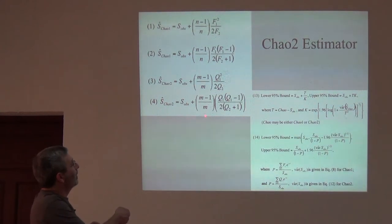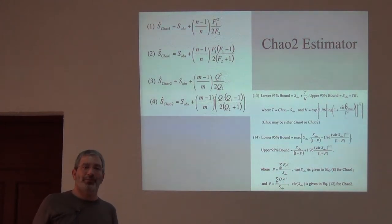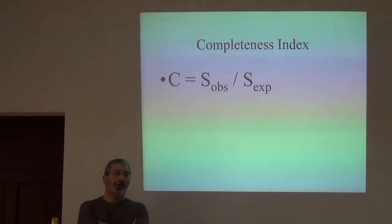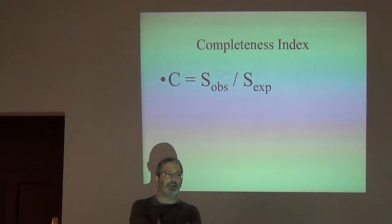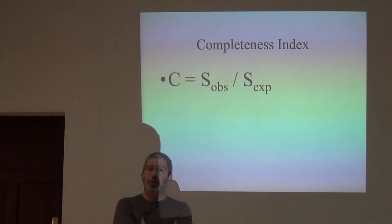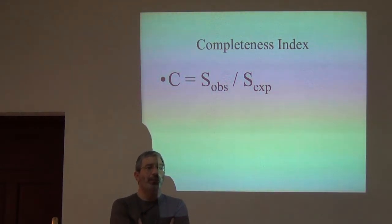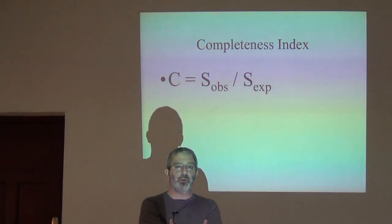We just looked at our two matrices and did some calculations. For the first matrix — the one that had a lot more ones in it — even though they both have the same accumulation curve, for the matrix that had a lot of ones in it, we were pretty sure we were done. We had observed 16 species and we predict that there are 16 species in that fauna or flora. But for the second matrix, where there were many more zeros than ones, the estimator gives a different result.